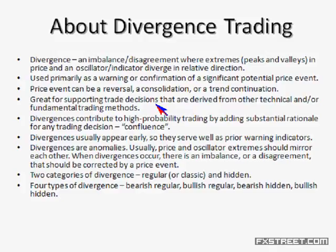If you have other factors — say, for example, you're looking at candlestick patterns, moving averages, trend lines — divergences can be extremely helpful in augmenting those other signals to provide you with a high probability trading opportunity. Divergences contribute to high probability trading by adding substantial rationale for any trading decision. It's what we call confluence.